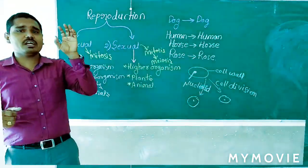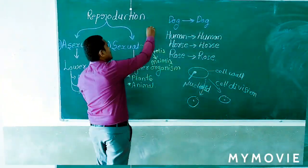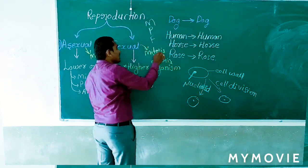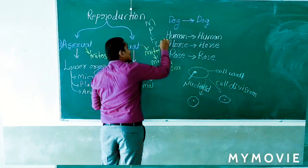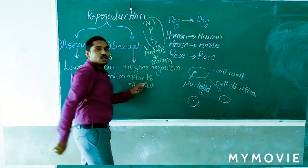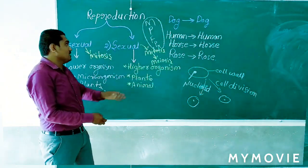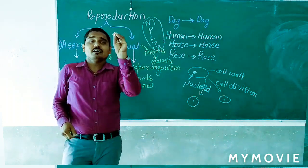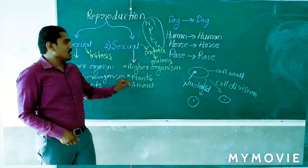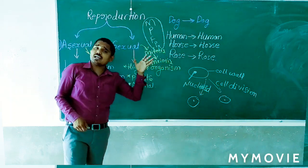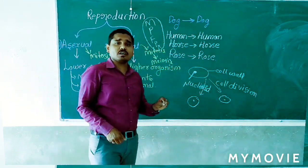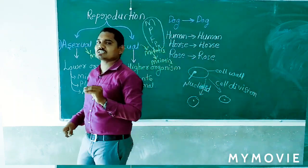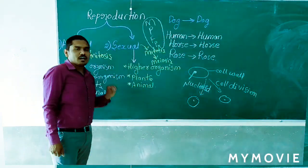Organisms may be divided into five kingdoms: Kingdom Monera, Kingdom Protista, Kingdom Fungi, Kingdom Plantae, and Kingdom Animalia. Out of this five-kingdom classification, Monera, Protista, and Fungi come under asexual reproduction. The remaining two kingdoms — Plantae and Animalia — have the maximum number of organisms under sexual reproduction, with some minimum organisms under asexual reproduction.